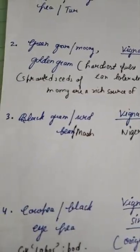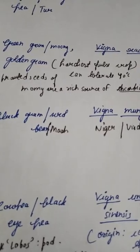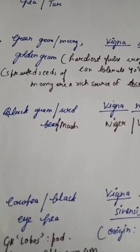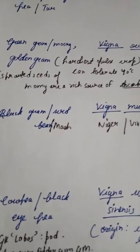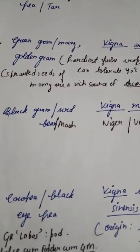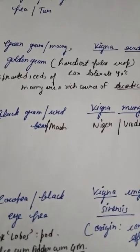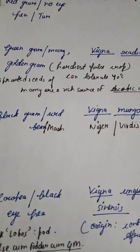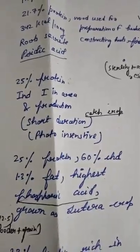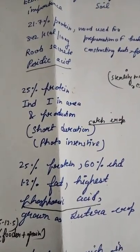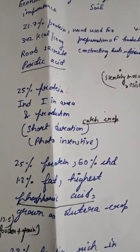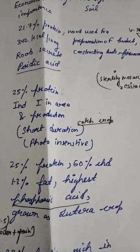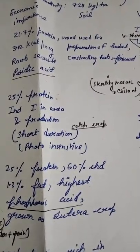Green gram, moong, or golden gram — it is the hardiest pulse crop and can tolerate up to 40 degrees centigrade. Sprouted seed of moong bean is a source of ascorbic acid — this was asked in Pantanagar entrance exam 2019. Moong is a short duration, photo-insensitive crop, so it is used in catch cropping.